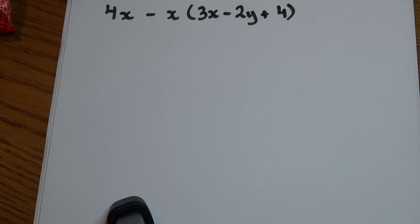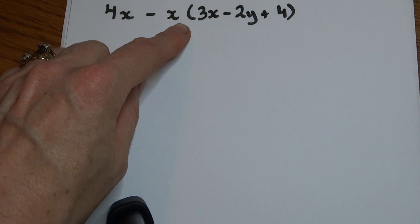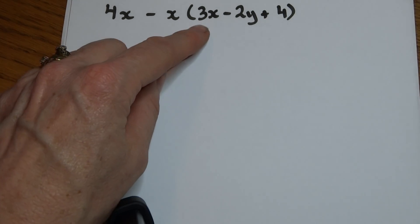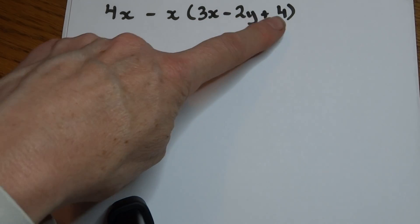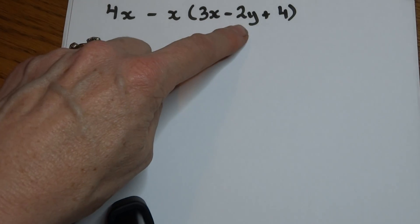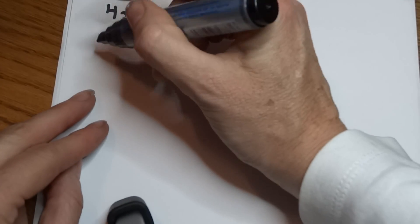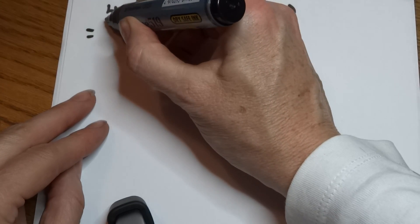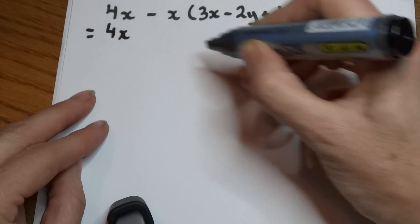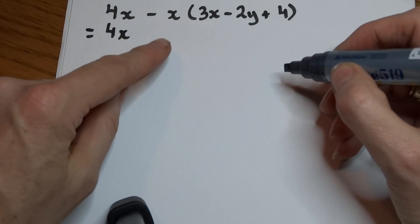Let's look at expanding some more brackets, some more expressions. So we have 4x minus x multiplied by brackets 3x minus 2y plus 4. This minus x has to be multiplied by every term inside the brackets. The first thing we do is we don't do anything with the 4x, because this is a term separate from the minus x multiplied by the brackets.